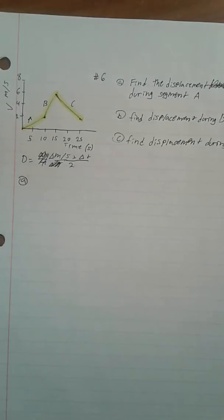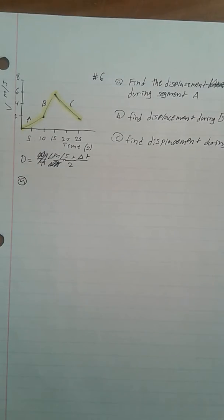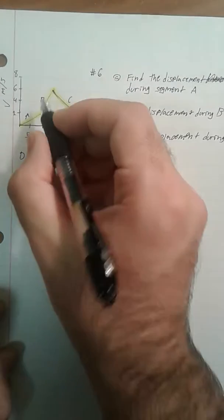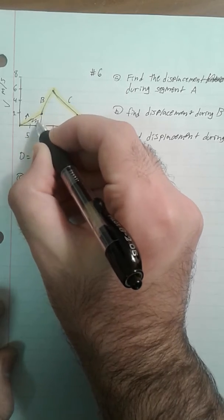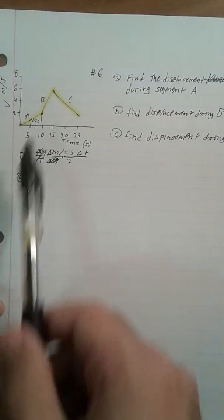In this problem, number 6, I have to find the displacement during segment A, B, and C. And the displacement on a velocity over time graph is the area underneath the line.